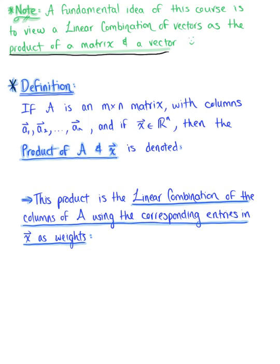Here is our definition. If A is an m by n matrix with column vectors a₁, a₂, all the way to aₙ, and if vector x is in Rⁿ, then the product of matrix A with vector x is denoted as A times vector x. This product is the linear combination of the columns of matrix A using the corresponding entries in vector x as weights — meaning the scalars or coefficients of the column vectors.